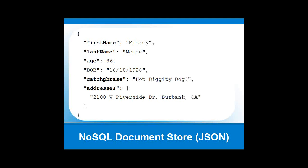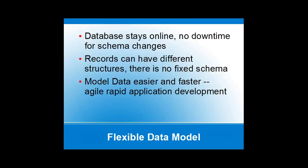If a view tries to access a document with the catchphrase property and it doesn't exist, it will just come back as null — it always fails gracefully. Think of the last time on a Friday afternoon your boss came in and needed you to add something that required a new database column. This is one of the benefits you get from JSON — everything's flexible. Each document in your bucket doesn't even have to have the same schema. We could store multiple different types of users with completely different properties. No downtime for schema changes, records can have different structures, no fixed schema — it's agile, rapid application development.